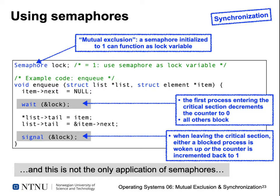If we are the first process to enter the critical section, the lock is initialized to 1. We enter, and the lock is decremented to 0, so all others must wait — and while they wait they are blocked, not wasting CPU time. When leaving the critical section we call signal: if another process was waiting, it's woken up and we don't change the lock value since it immediately continues into the critical section. If no other process was waiting, signal increments the lock back to 1.